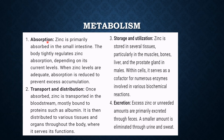Metabolism: zinc is primarily absorbed in the small intestine. The body tightly regulates zinc absorption depending on its current levels. When zinc levels are adequate, absorption is reduced to prevent excess accumulation. Once zinc is absorbed, it is transported into the bloodstream, mostly bound to proteins such as albumin, and distributed to various tissues and organs throughout the body where it serves its important functions.